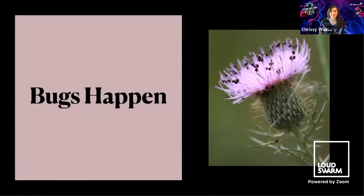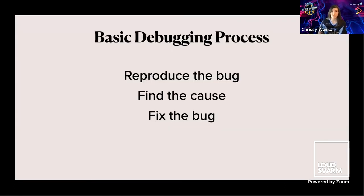Bugs happen. They can be discovered during development, through automated or manual testing, and by your users in production. I've broken up the debugging process into three main steps: reproduce the bug, find the cause, and then fix the bug. Finding the cause can sometimes be the most time-consuming part, especially if the issue is not immediately obvious — it sends you off trying to figure out what piece of code is actually causing the problem.